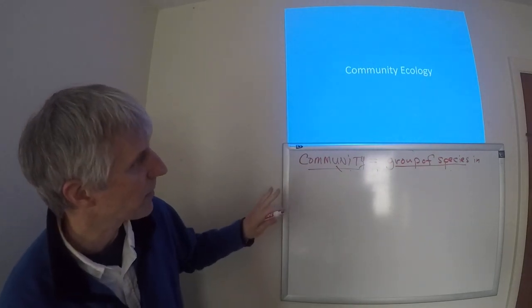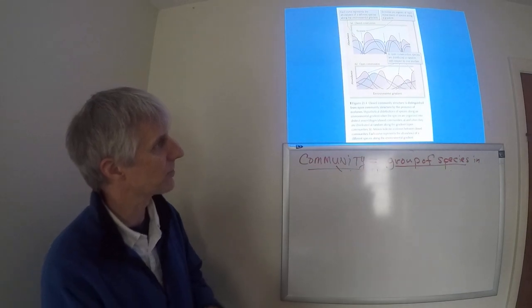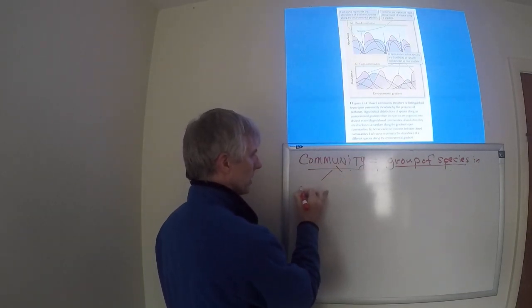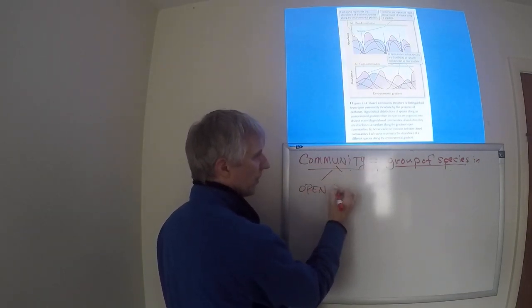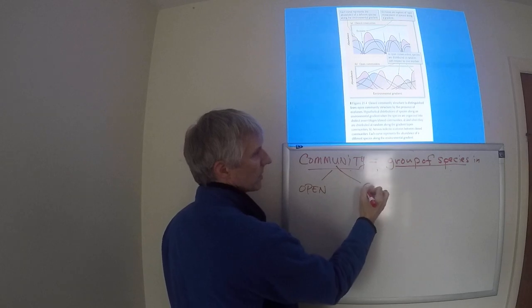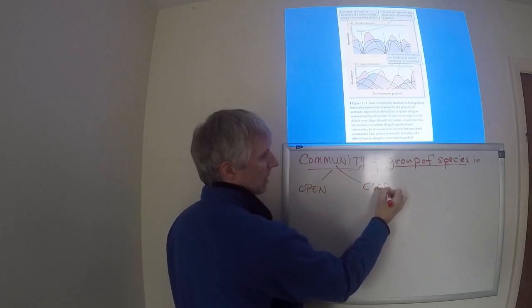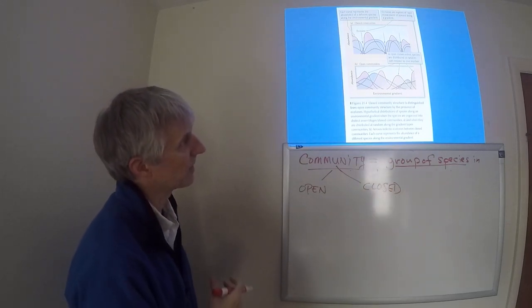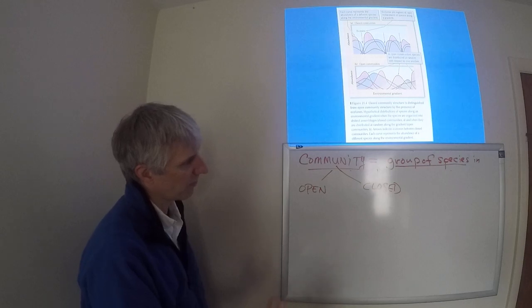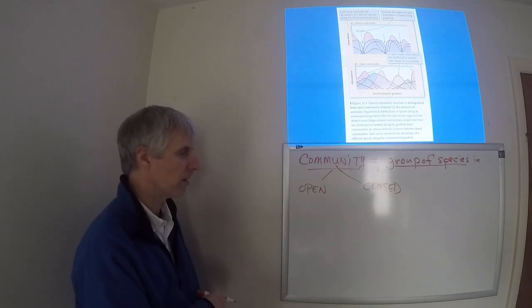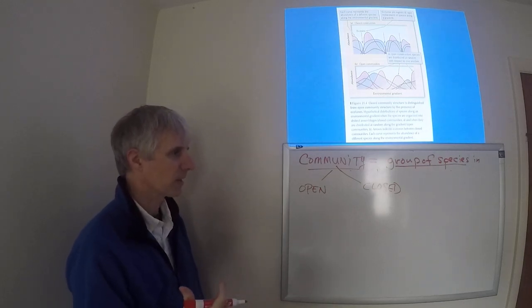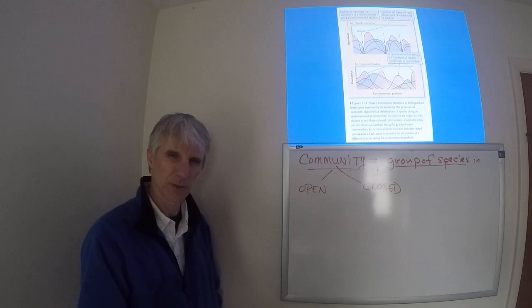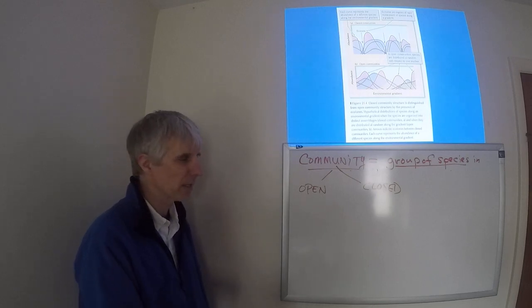We can define communities into two broad categories: open communities and closed communities. This is defined based on the arrangement of species over particular geographic areas.